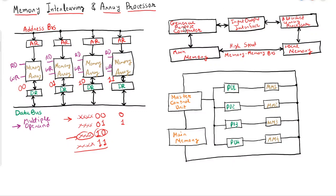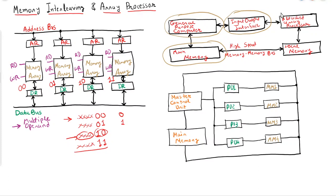As you can see in the figure, this is the general purpose computer, this is the main memory, and this is the interface. These three elements — general purpose computer meaning CPU, main memory, and input/output interface — are part of the computer. The array processor with its local memory is attached additionally.